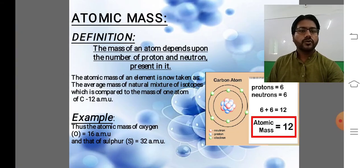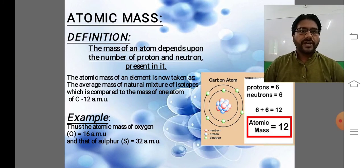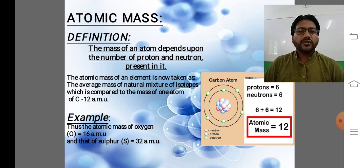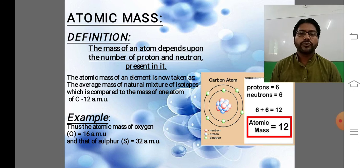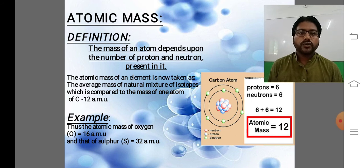First of all we are going to start from some basic definitions. Atomic mass — so what is atomic mass? The mass of an atom depends upon the number of protons and neutrons present in it. Atomic mass, which we call mass number or atomic weight, is the number of protons and neutrons present in the nucleus.